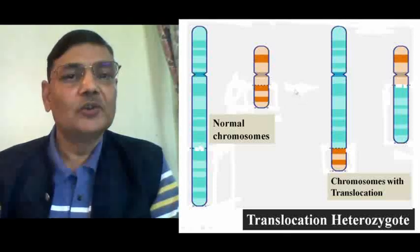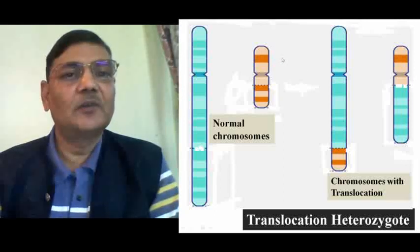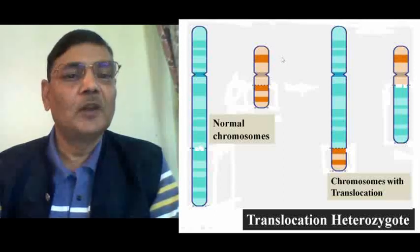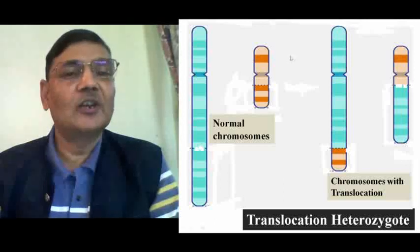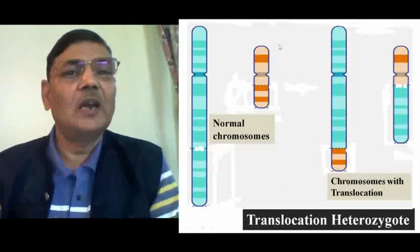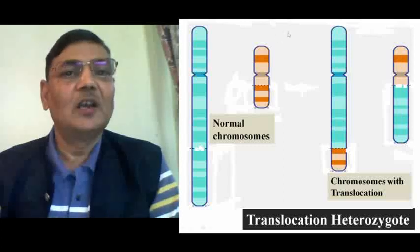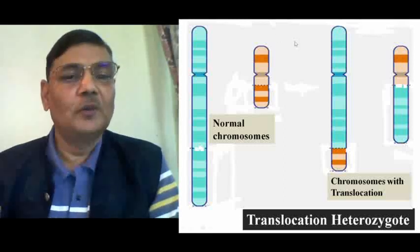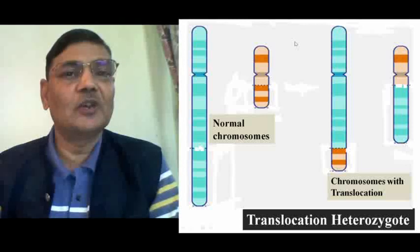Such cases exist not only in humans but also in plants and several different species of animals. In Drosophila, for example, translocation heterozygotes are also found.